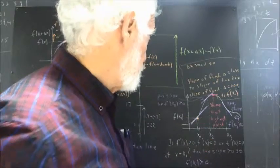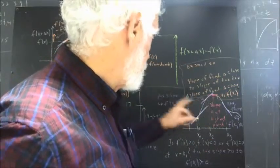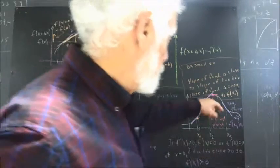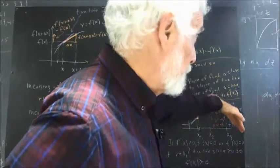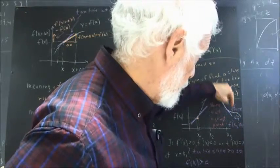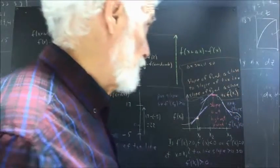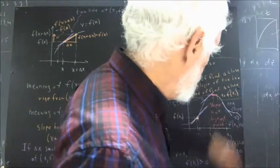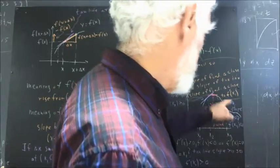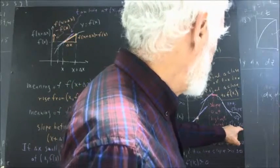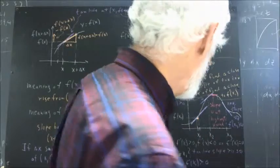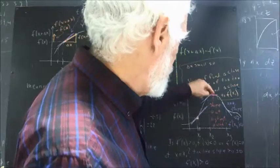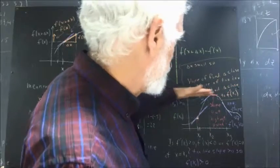Same with f prime of x2 — slope is positive, so f prime of x2 is greater than zero. Over at x3, we see a negative slope. If we have a positive run, we have a negative rise, so rise and run have opposite signs and the slope is negative. The graph is decreasing at that point, so f prime of x3 is less than zero. We also note the slope is zero at the highest point of the graph, and that's going to be very important.